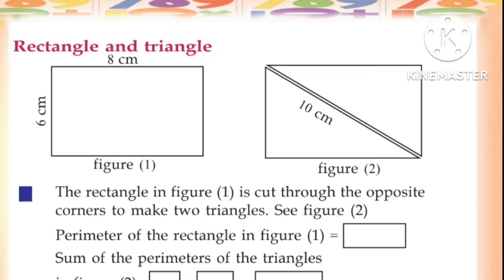The rectangle in figure 1 is cut through the opposite corners to make two triangles — see figure 2. Figure 1: the length is 8 cm, breadth is 6 cm. The diagonal of the rectangle is 10 cm. The rectangle makes 2 triangles in figure 1.